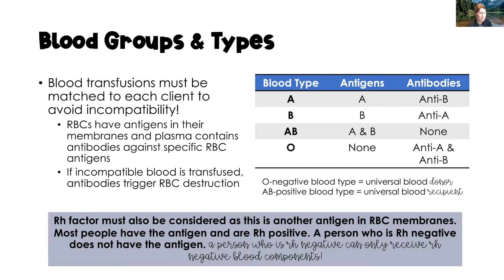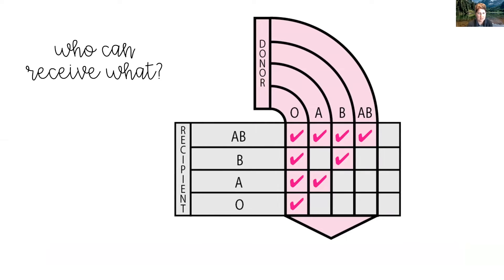The Rh factor is also important — it's another antigen in red blood cell membranes. Most people have this antigen and are Rh positive. Some people are Rh negative and do not have the antigen. Someone who is Rh negative can only receive Rh negative blood components. So you could be A positive, A negative, B positive, B negative, AB positive, AB negative, O positive, or O negative. If you are negative of any blood type, you can only receive a negative blood type component.